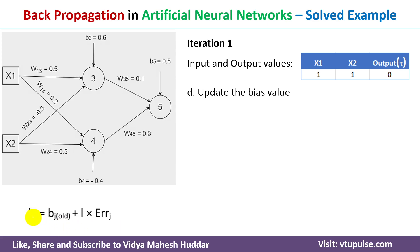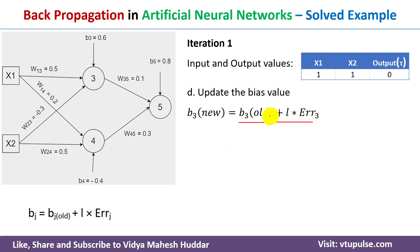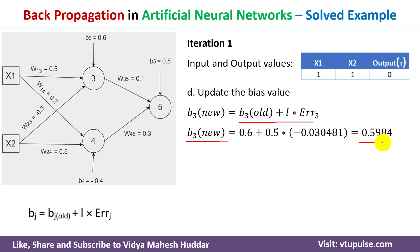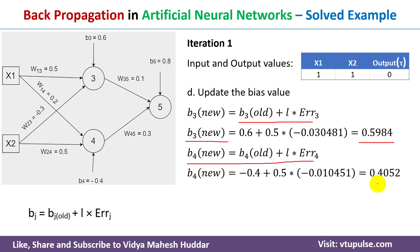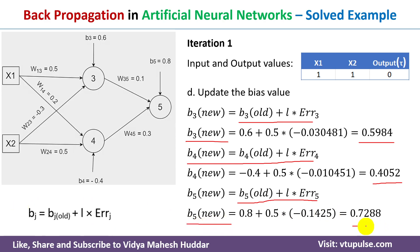The next step is to update the biases using: b_j(new) = b_j(old) + l × error_j. For the hidden layer: b3(new) = b3(old) + l × error_3. For neuron 4: b4(new) = b4(old) + l × error_4 = 0.4052. For the output layer: b5(new) = b5(old) + l × error_5 = 0.7288. This completes one iteration; the process repeats until the error reaches an acceptable level or the required number of iterations is complete.